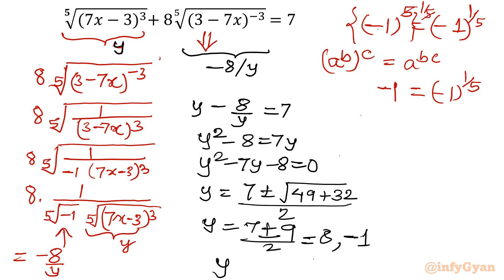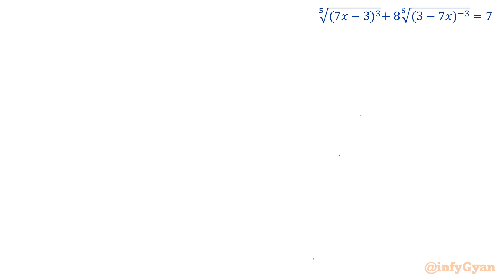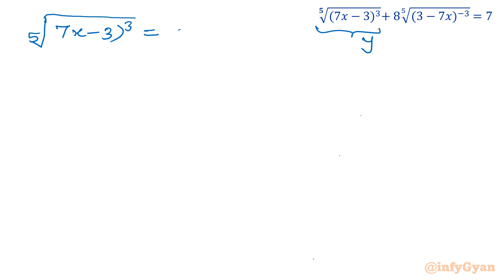So there are two values of y. Remember, y is our substitution for the first term, the 5th root of (7x minus 3) cubed. We will consider y equal to 8 and y equal to negative 1, and solve each separately.